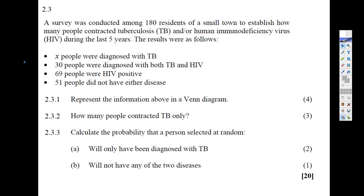Here's the second probability problem, the Venn diagram problem. They tell us that among 170 residents in a small town — that's a total of 180. If we're doing probability, we're going to be dividing by that number. In the survey, they wanted to establish how many people contracted tuberculosis or HIV during the last five years. Here's the information they give.